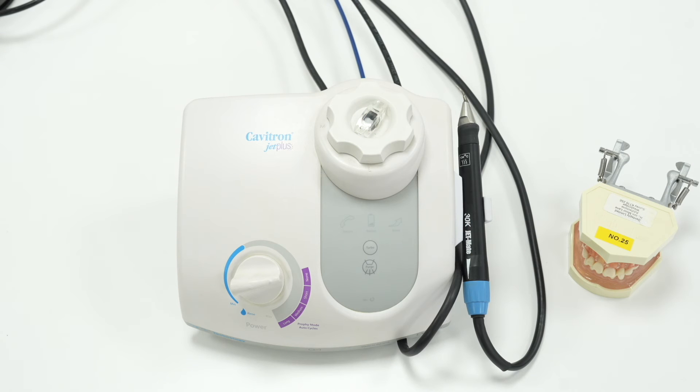So the most popular option is to select none, which means that when the foot pedal is depressed, the polishing powder comes through. When not depressed, it stops, which is the easiest and most predictable way to use the profi mode.